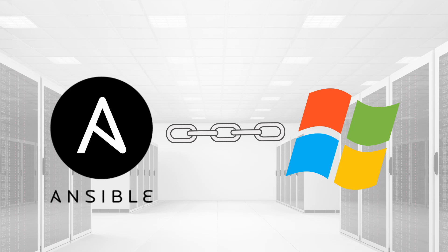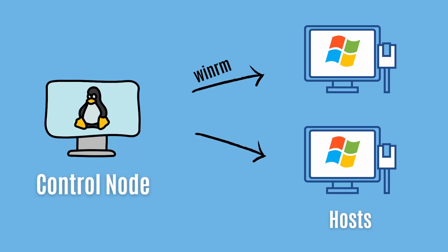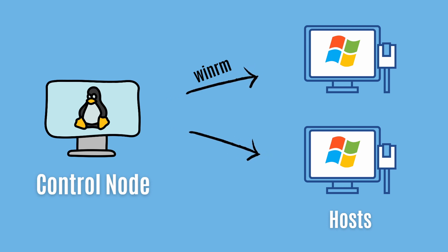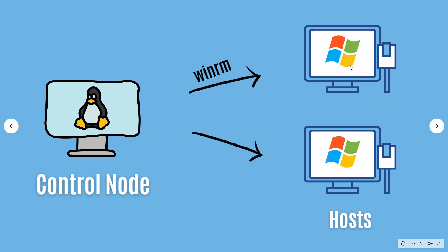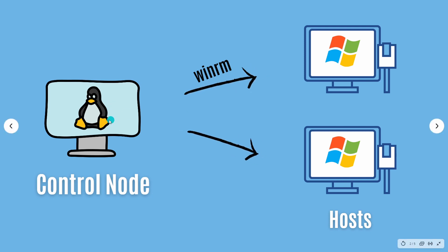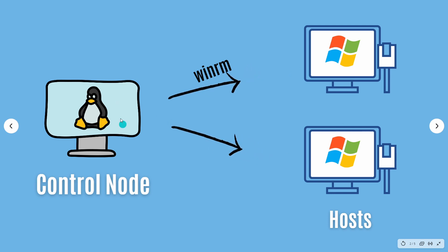If you are new to Ansible, I would suggest you go back to my previous video and learn a bit of Ansible, but I also highly recommend going through the Ansible documentation. The way Ansible works is it has a control node and it has the host machines where you install and manage software — that's why it is called a configuration management tool. One important thing to note in the Windows case is you cannot have Windows as a control node in Ansible. Ansible always has Linux as the control node, so if you want to manage your Windows servers you have to control them from a Linux server.